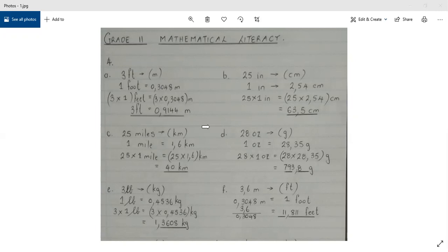Then if we move on to 4b, 25 inches converted to centimeters. 1 inch is 2.54 centimeters. Therefore 25 inches, you multiply 25 by 2.54 and you get 63.5 centimeters.